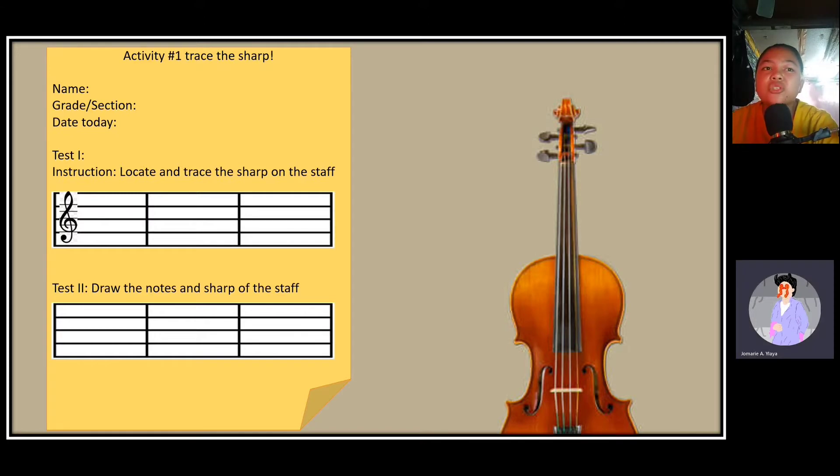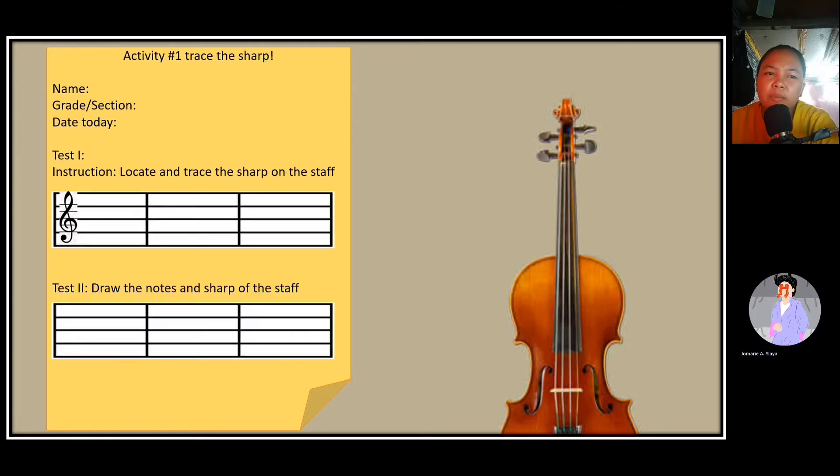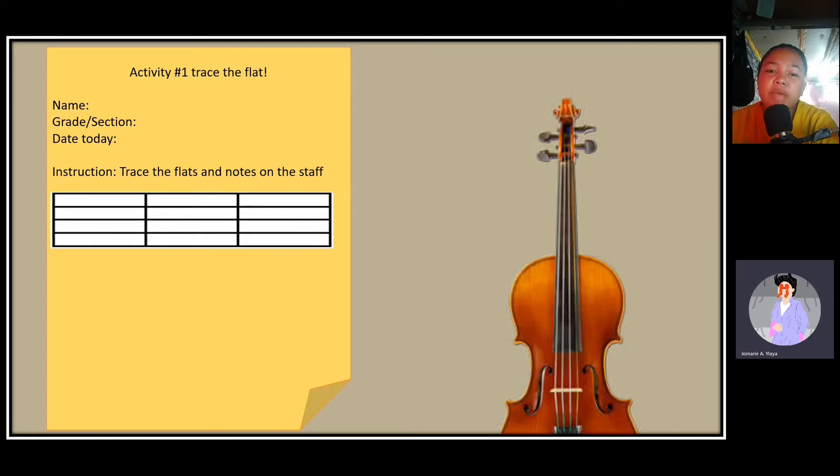Very good. Send it to our messenger, Jesse. Very good. How about the test two? Are you done? Wow. Very good man sa students. Next? Here. Second activity. Okay, students. It should be activity number two. Trace the flat. I'm so sorry. Na rong si teacher. O butang sa number. Tano na jod si teacher.